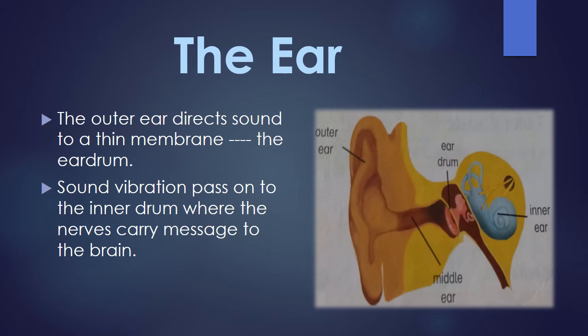The outer ear directs sound to a thin membrane called the eardrum. In this diagram you can see that sound goes from the outer ear into the eardrum. Sound vibrations pass on to the inner ear where the nerves carry the message to the brain. From the inner ear, the nerve cells known as auditory nerves carry the message and send signals to the brain. The brain then decides what sort of sound you are hearing — whether it is low or high, pleasant or unpleasant. This is all about the human ear.